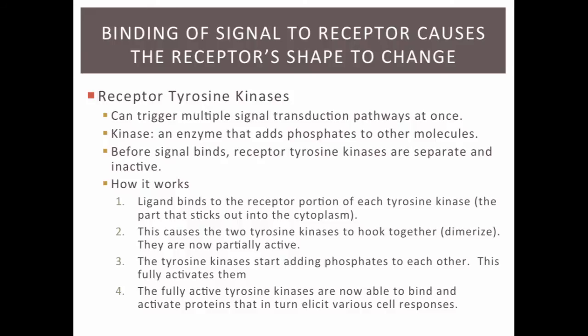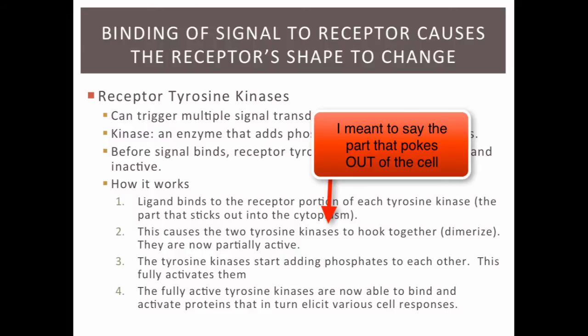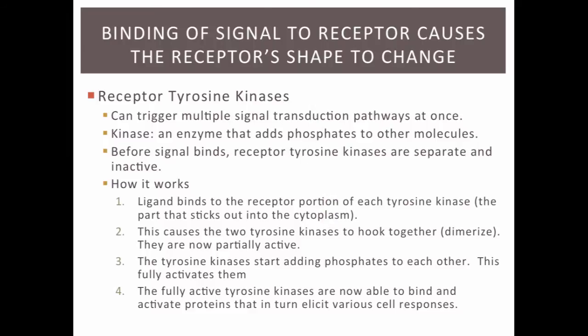Before a ligand binds, receptor tyrosine kinases are found separate and inactive, embedded in the plasma membrane. The ligand binds to the receptor portion of each tyrosine kinase — the part that pokes out into the extracellular space. This causes the two tyrosine kinases to hook together, a process called dimerization, forming a dimer. This partially activates the receptor tyrosine kinases. The tyrosine kinases then start adding phosphates to each other, which fully activates them. The fully active tyrosine kinases can then bind to and activate other proteins in the cell by phosphorylating them, and these activated proteins cause various cell responses.